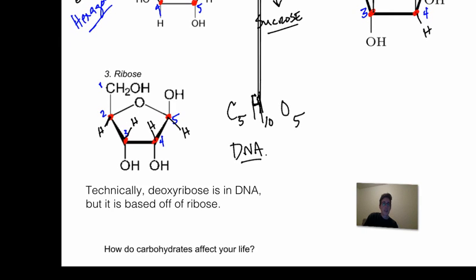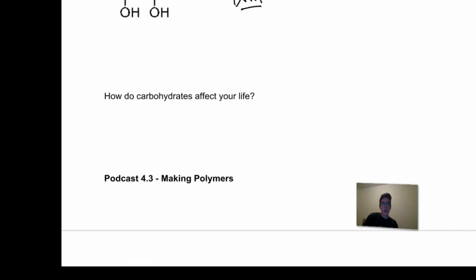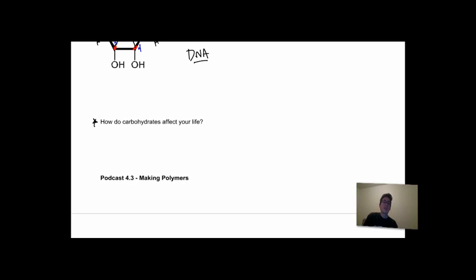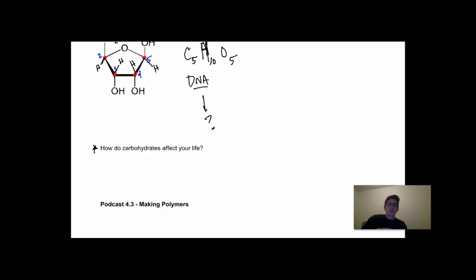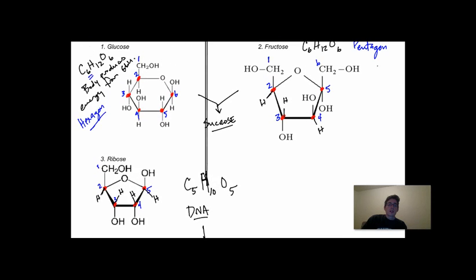Ribose is one of the components of DNA. We're going to be seeing ribose a lot — it's still a sugar, but it's part of the backbone of DNA. Think about how carbohydrates affect your life when you eat sugar. If ribose is part of DNA and we didn't have carbohydrates, what would happen to DNA if we didn't have the ribose?